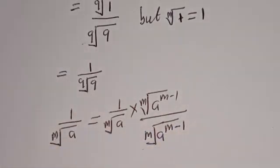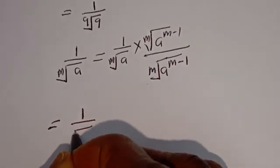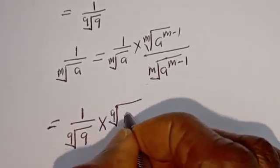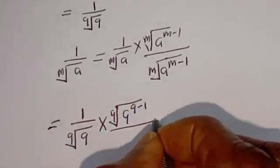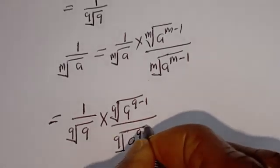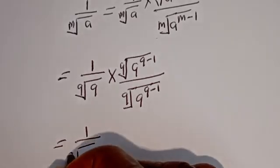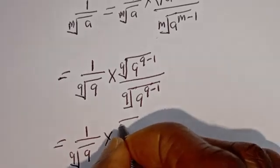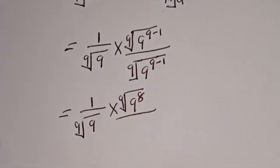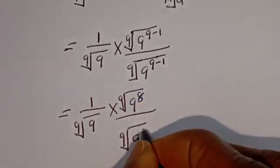Then this can be written as 1 divided by the 9th root of 9, multiplied by the 9th root of 9, multiplied by the 9th root of 9, to the power of 9 minus 1. Then this is equal to 1 divided by the 9th root of 9 to the power of 8, divided by the 9th root of 9 to the power of 9 minus 1, that is 8.